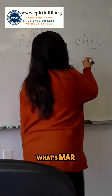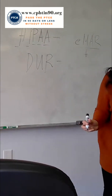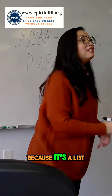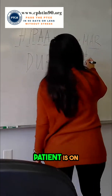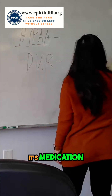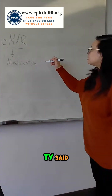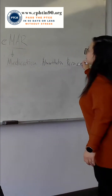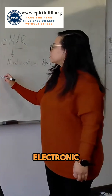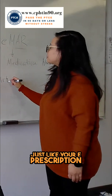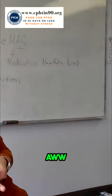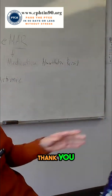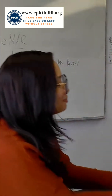MAR stands for Medication Administration Record — it's a list of medications the patient is on, like a chart. The 'e' in eMAR stands for electronic, just like an e-prescription or e-script — it becomes electronic.